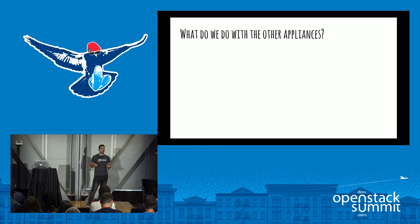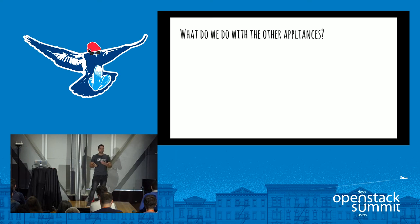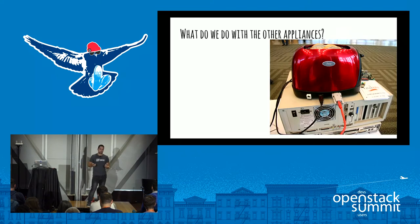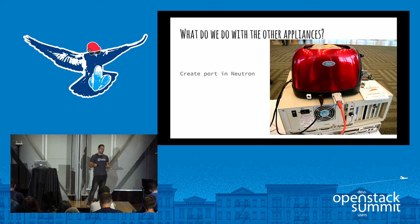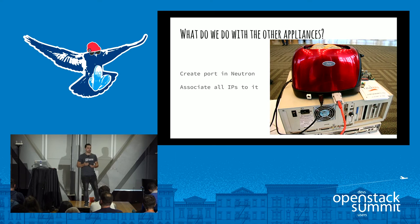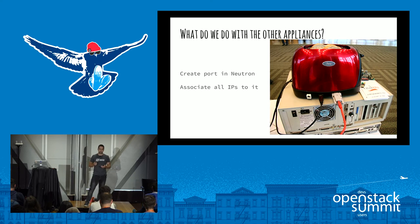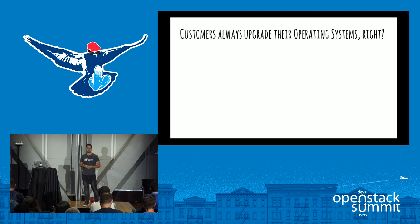Customers also have other appliances — load balancers, firewalls — because they have complex network settings. We don't currently provide load balancer as a service or firewall as a service, so these are physical machines. We treat them as 'toasters with IPs.' We simply create ports in Neutron and assign all IPs to them. If there are multiple subnets for a firewall or load balancer, we create multiple ports. This keeps Neutron as the single source of truth and prevents the customer from accidentally reclaiming IPs.